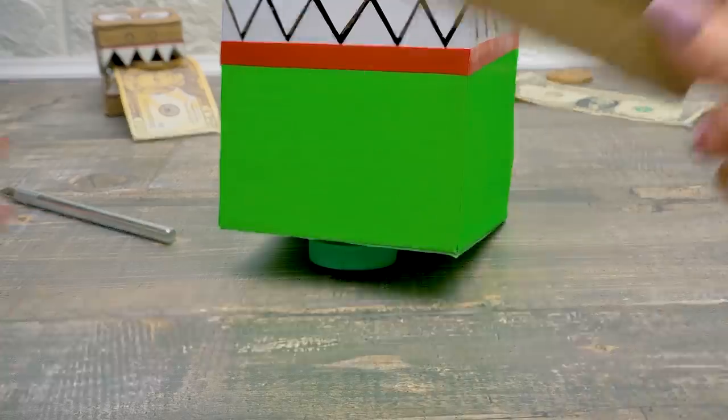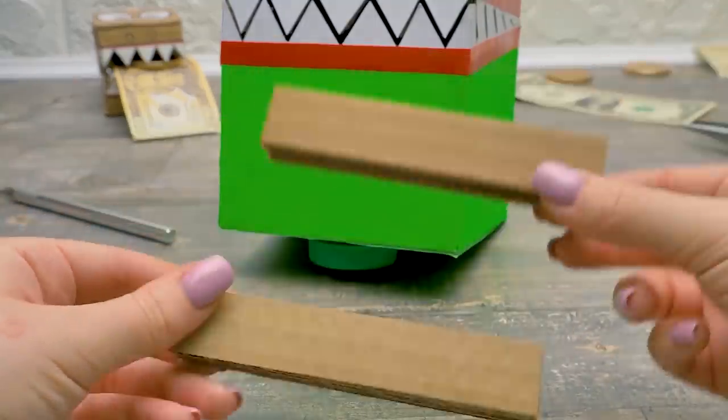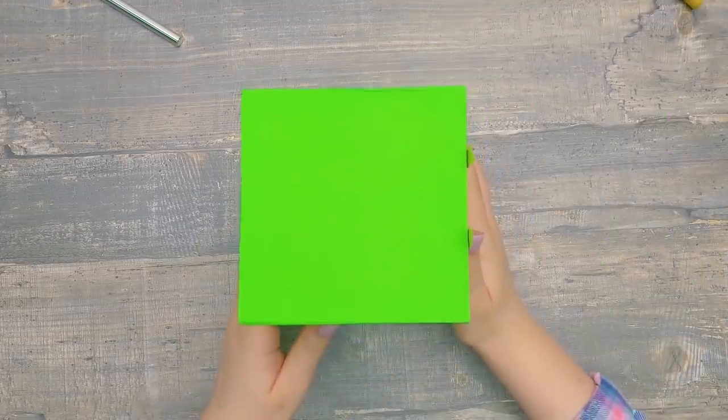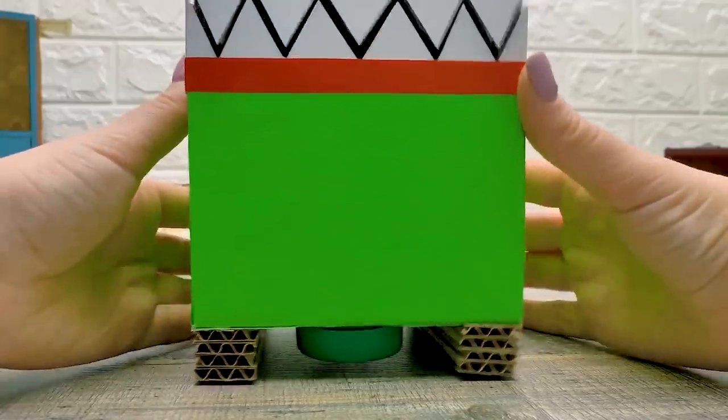They look kind of evil. Well, it'll have to scare strangers away from your treasures. So I think it's just the right look. This won't do. Let's make stands from cardboard. They'll keep our money box stable.